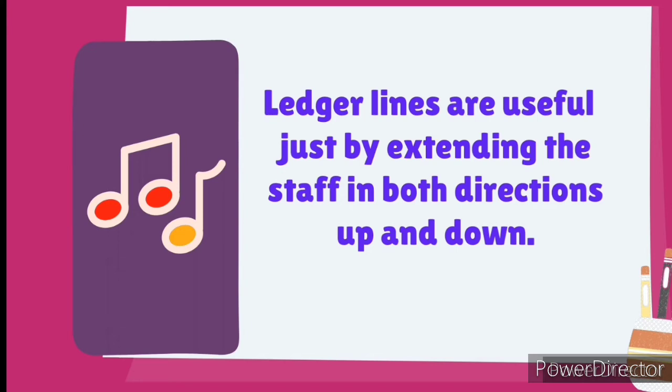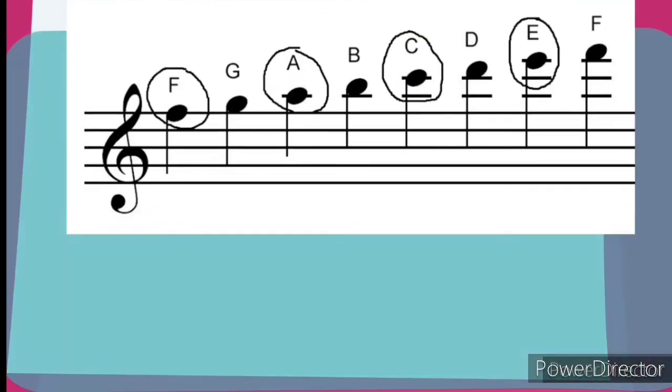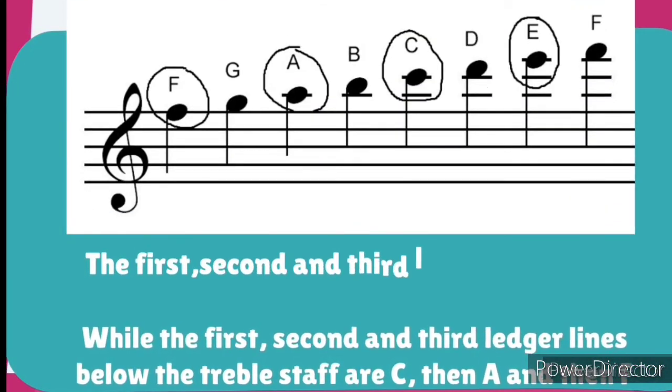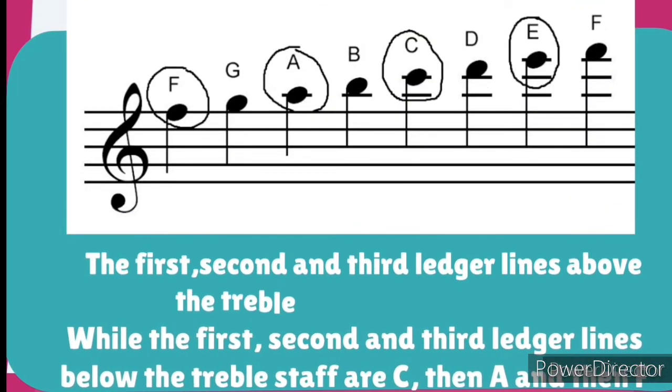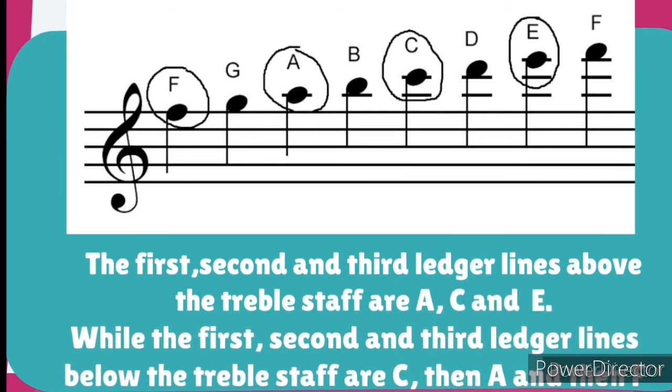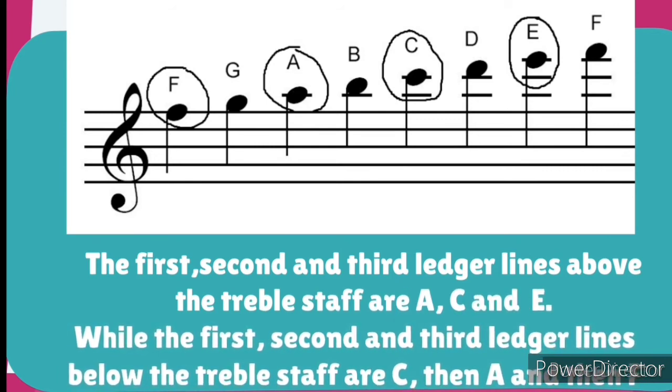Now we are going to be looking at these lines on the staff. The first, second, and third ledger lines above the treble staff are A, C, and E. The first, second, and third ledger lines below the treble staff are C, then A, and then F.